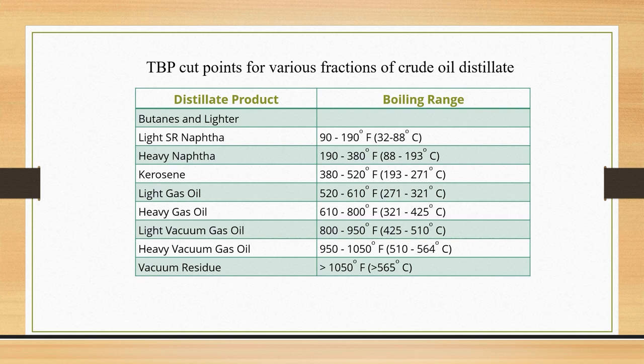Vacuum residue comes out to around 1050 degrees Fahrenheit, indicating that it is the heaviest boiling fraction. Basically, the data indicates that as we go down the list, the boiling point of the component is increasing, indicating that the heaviness of the fraction increases. The first component on the list is the lightest boiling oil, meaning it boils at a relatively lower temperature compared to the adjacent ones below it.